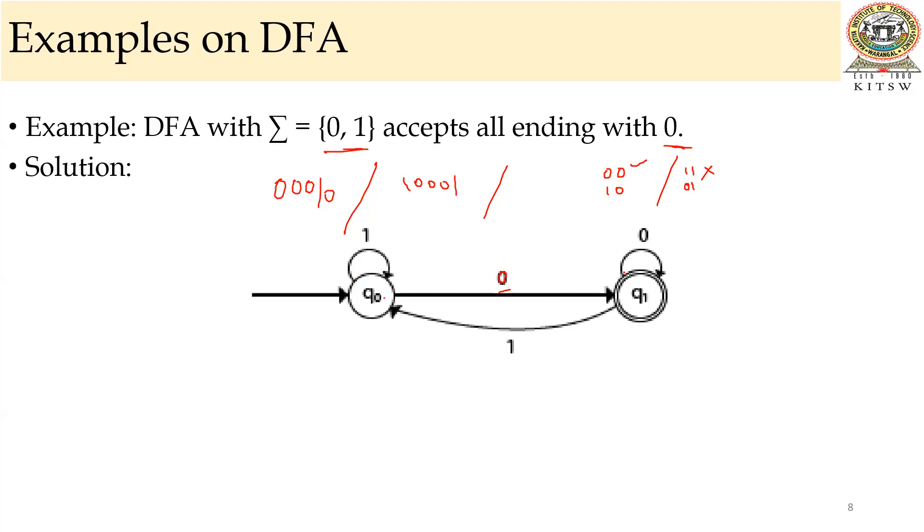And if it is a double 0, then we have to go for self loop. And if it is ending with 1, then you are sending it back to the initial state. And if it is starting with 1, then you are giving it a starting loop, self loop.